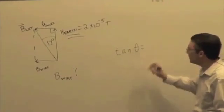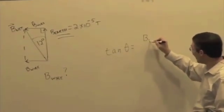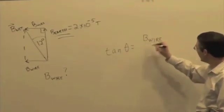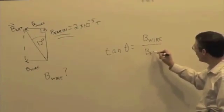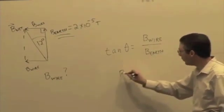Tangent of theta is going to give me the opposite, B of the wire, over the adjacent, B of the Earth. And then I can just solve for it.